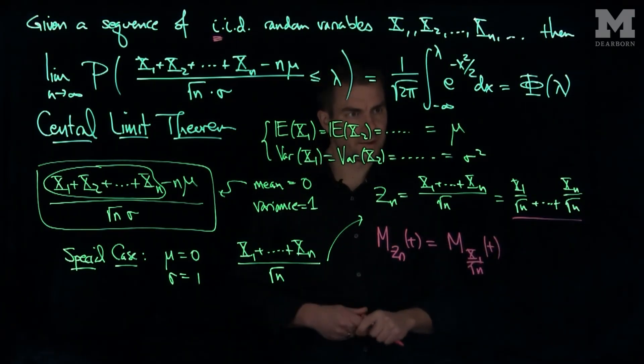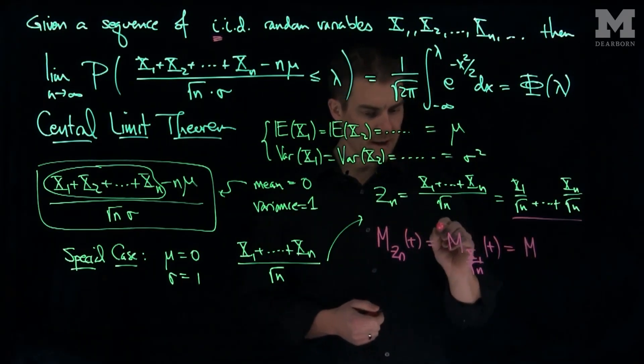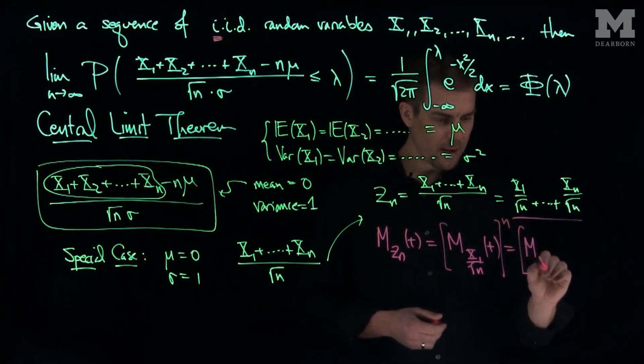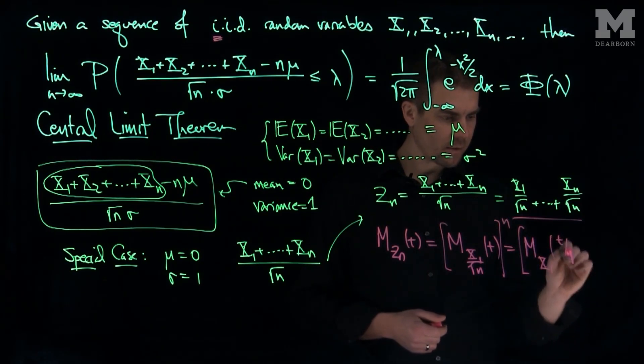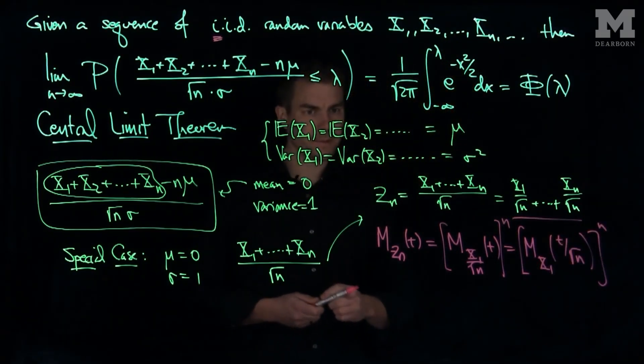And we know that the linearity rule for the moment generating function says this is the moment generating function, and I'm going to have n copies of this, so that gets raised to the power of n. Will be Mx1 of t over the square root of n all raised to the power of n.